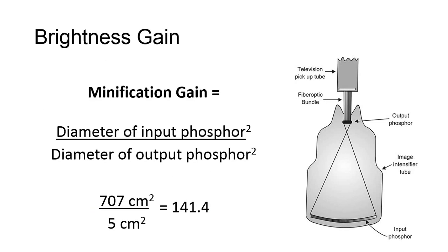Let's talk about brightness gain. There are two processes that contribute to intensifying the image, ultimately resulting in the final brightness achieved and the light image emitted from the II toward the TV camera or other recording devices. These are flux and minification.